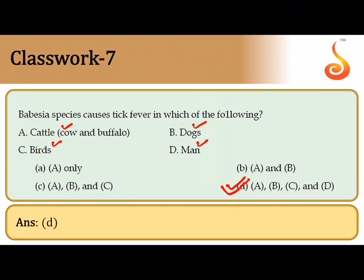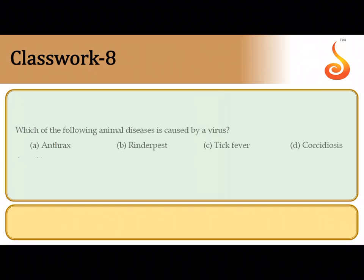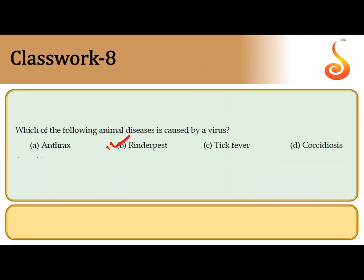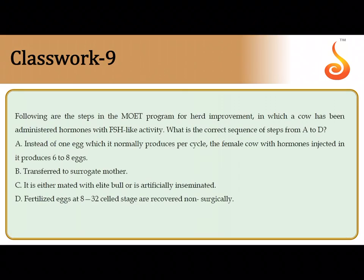The eighth question: which animal disease is caused by a virus? Among the options, the animal disease caused by a virus is Rinderpest, also referred to as Tephi Murine or cattle plague. The causative agent is a virus. So the correct answer is Rinderpest, option B.